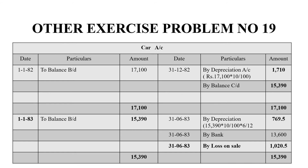For 1983, we bring down the previous year balance of 15,390 rupees. On 31st June 1983, they sold the car, so we calculate depreciation up to that date: 15,390 × 10/100 × 6/12, which equals 769 rupees 50 paise. Since we are selling the car and receiving cash, the sale proceeds are credited in the account — by Bank — for 13,600 rupees.